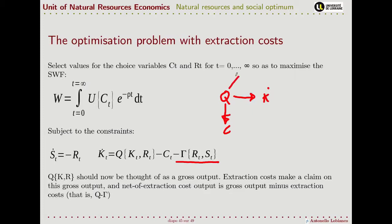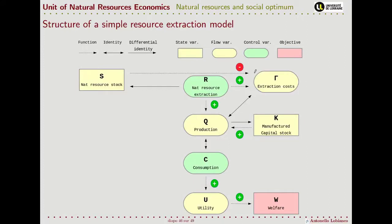In our simple model, what is produced can be consumed, can increase the capital stock, or can be used to pay for extraction costs. This is the flowchart with the addition of extraction costs. As for consumption, what is produced can be used for consumption or for extraction costs.